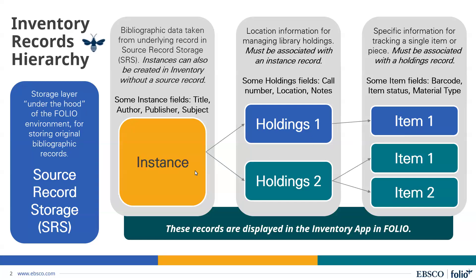Instance records are records that contain bibliographic and administrative information about a particular resource — what is known as the bibliographic record. They are mostly derived from full bibliographic records in MARC, for example, and are intended to provide information for library staff to identify and select records in order to perform work on associated holdings and item records.